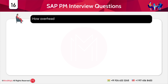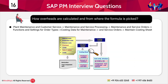How are overheads calculated and where is the formula picked from? For example, if the client has a default setting of 10 percent overhead and wants to change it, the path is: Plant Maintenance and Customer Service > Maintenance and Service Processing > Maintenance and Service Orders > Functions and Settings for Order Types > Costing Data for Maintenance and Service Orders > Maintain Costing Sheet. Select the costing sheet in use, push the costing sheet rows, see the column overhead rate, select the row, and push the overhead rate.